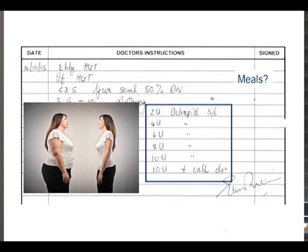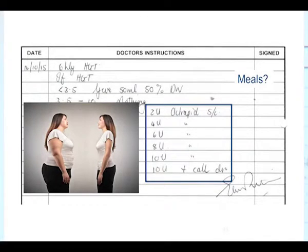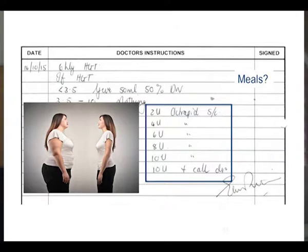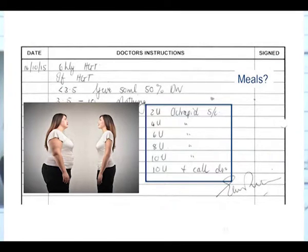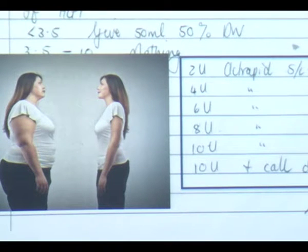Sliding scales are a practice we are trying to eliminate completely. Why are they a bad idea? Firstly, there's no flexibility — they don't account for clinical factors or whether the patient is eating, and there's no relationship to meals. Secondly, four units of insulin is a lot for a thin patient but nothing for a large patient, so individual patient factors are ignored. The standard 2, 4, 6, 8, 10, 12 units if sugar is 10, 12 — this is an unphysiological approach to insulin.